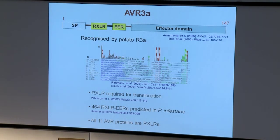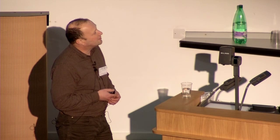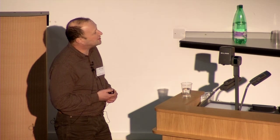Let me introduce you to an effector from Phytophthora infestans — this is AVR3A, recognized by the potato resistance protein R3A. It has a very simple structure. It's a small protein, 147 amino acids long. It has an N-terminal signal peptide for secretion from the pathogen. The C-terminal half of the protein is the business end, the effector domain, and in between is a domain containing the conserved motifs RxLR and EER.